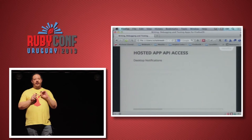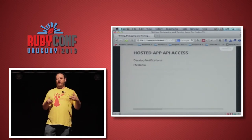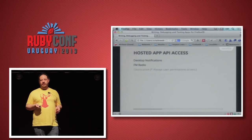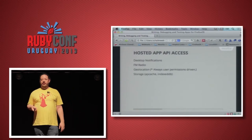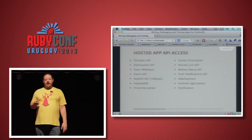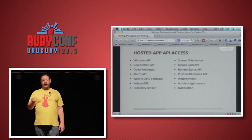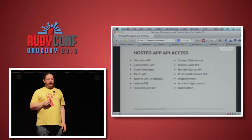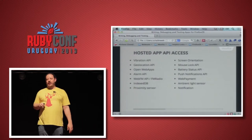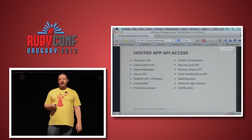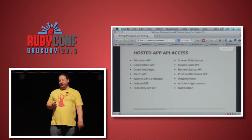Hosted apps have access to APIs like desktop notifications, FM radio, geolocation, and storage — so you can have offline apps using app cache, local storage, and IndexedDB. Other available APIs include vibration, open web apps (install and manage apps), mouse lock (great for games), ambient light sensors, web payments, and battery status API — as Jim mentioned, if you don't check your battery, bad things might happen.